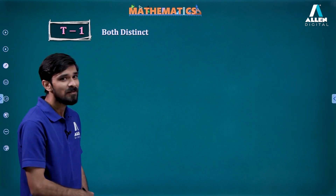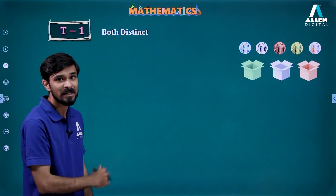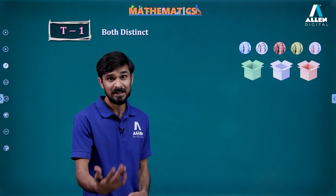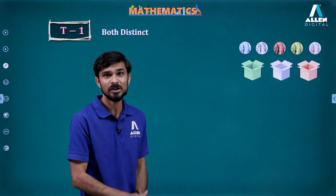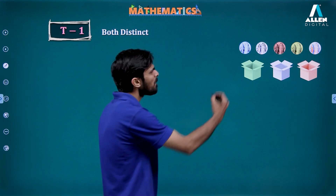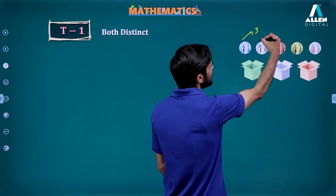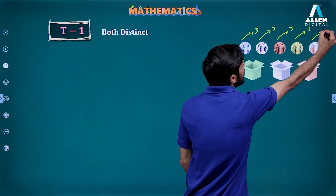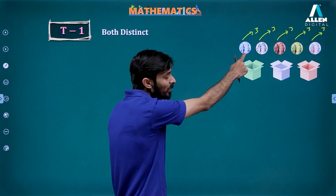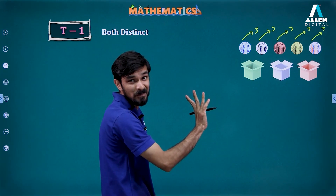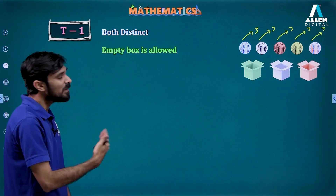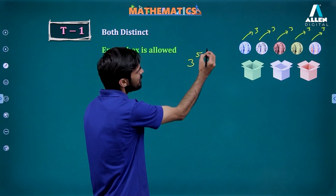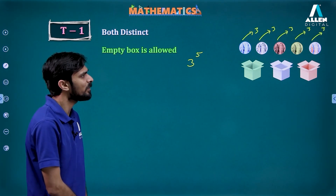The first case: both marbles and boxes are distinct. This is the same situation as distributing distinct books into distinct students. Each marble has three choices — three distinct boxes to go to. If empty boxes are allowed, then there are 3 to the power 5 ways of distributing this.